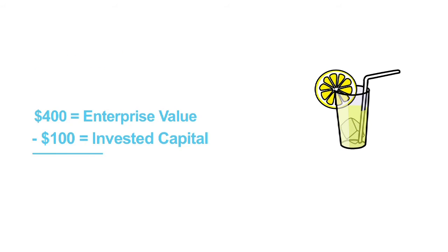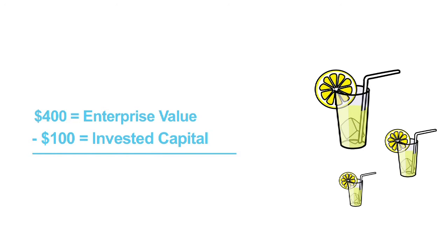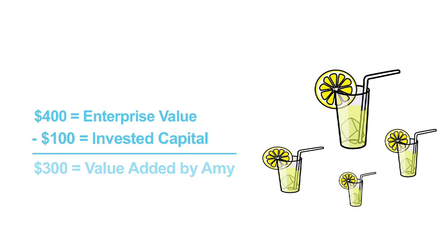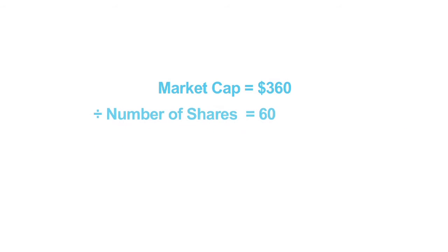Remember that the invested capital was only $100. The difference between the enterprise value and the invested capital is $300. This $300 can also be thought of as the value added by Amy to the initial capital. The market cap is $360, and the price to book is $360 divided by $60, or 4.